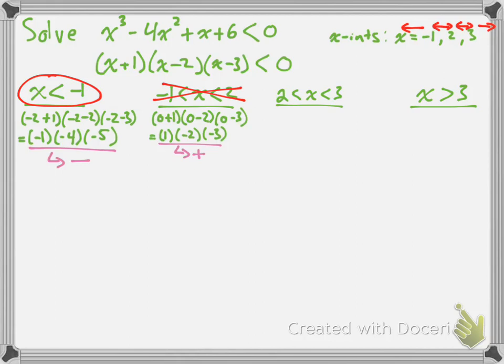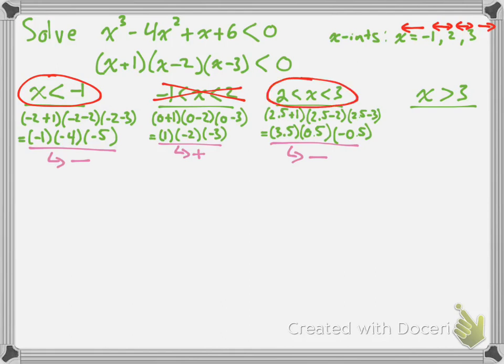For the interval 2 < x < 3, let's try x = 2.5. Substituting: (2.5 + 1)(2.5 - 2)(2.5 - 3) = (3.5)(0.5)(-0.5). We have a positive times a positive times a negative, which gives a negative number. So for any value of x between 2 and 3 we get a negative value, which means this interval is also a solution to our inequality.